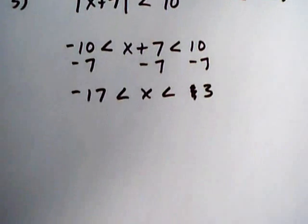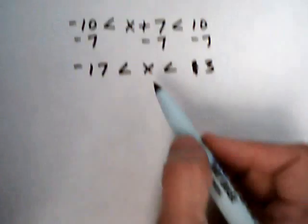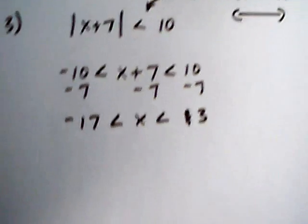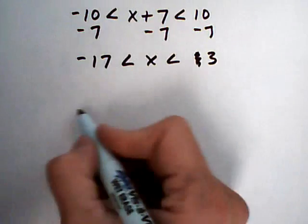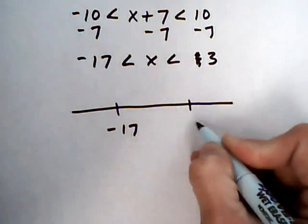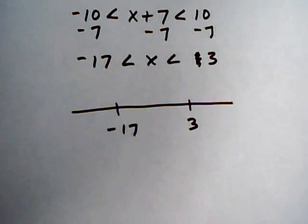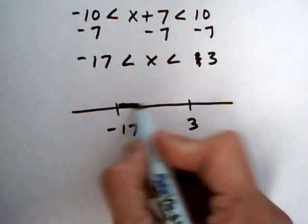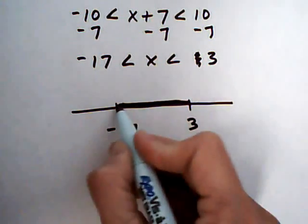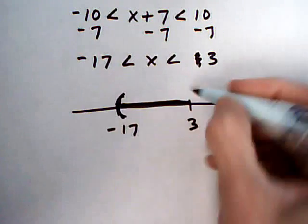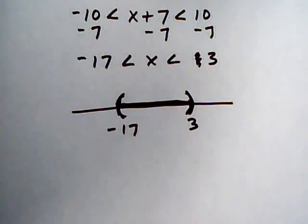And let's take a look at the graph. And you'll see how it comes out to be this shape. So we put down our important points, minus 17 and 3. And we want x greater than minus 17, but less than 3. So we're right in between the two numbers. Parentheses on both of them because we're not including them as possible values of x.